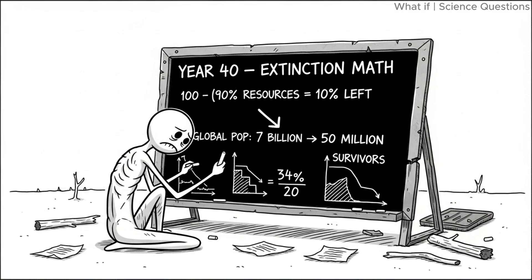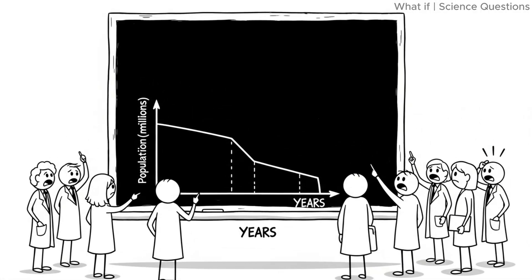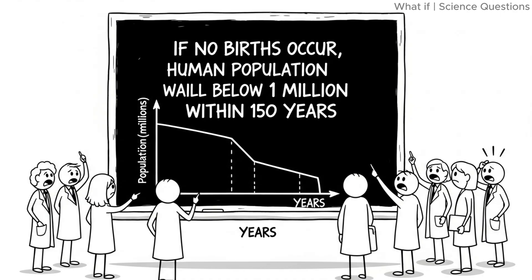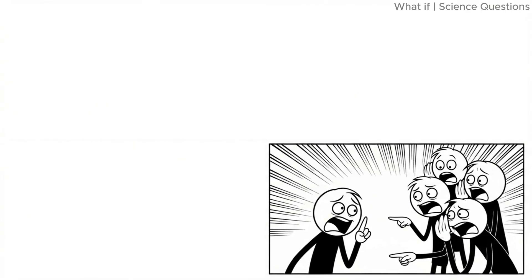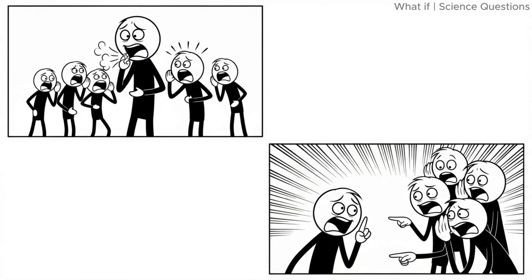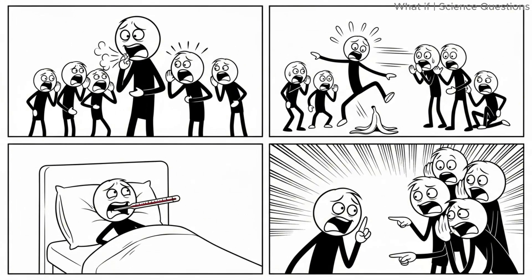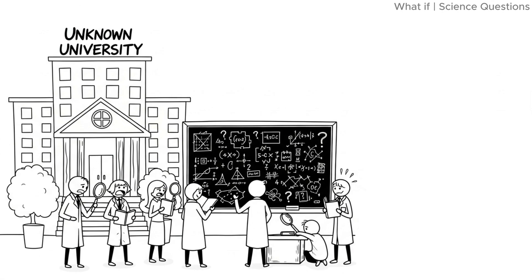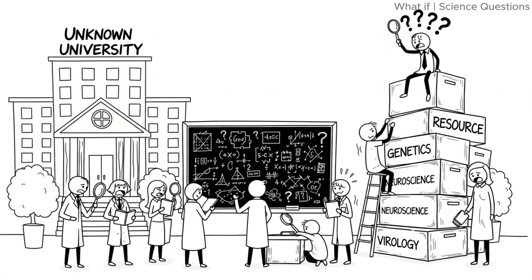Year forty. Extinction math. Scientists release a brutal calculation. If no births occur, the human population will fall below one million within 150 years. After that, nothing. The fear of death becomes universal. Every cough, every accident, every illness feels like the world shrinking. Universities devote all their resources to solving the mystery, but the answer remains unknown. Biology itself seems to have shut down.